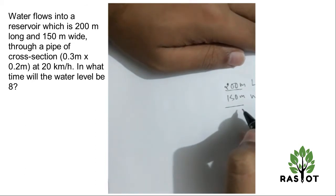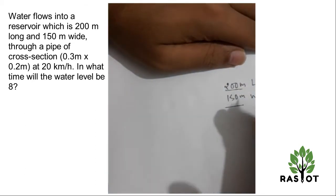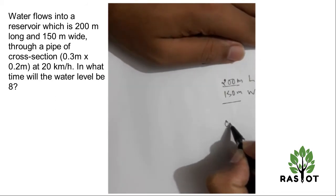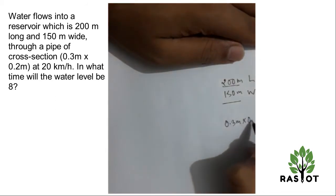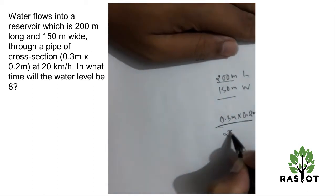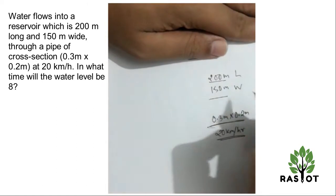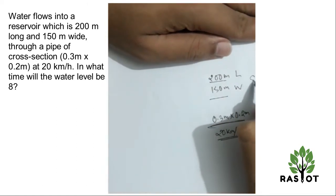It says that water flows through a pipe which has a cross-section of 0.3 meters by 0.2 meters. This pipe flows at 20 kilometers per hour speed. And it says the reservoir has a height of 8 meters, level of 8.